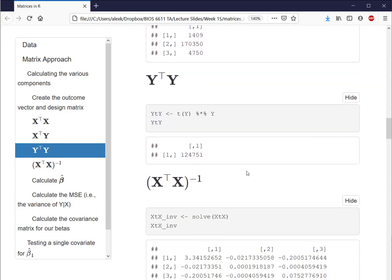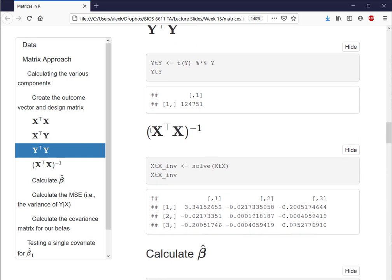We also know we need to take the inverse of that X transpose X term from before, and so here we're taking that in this step with the solve function. That will solve our given matrix for an inverse if it does exist. Again, if not, we would need to use a generalized inverse if possible. Here we see that we've just given it the information we calculated above for that 3 by 3 X transpose X matrix, and we can see then that it's calculated the inverse for us to use in our calculations.